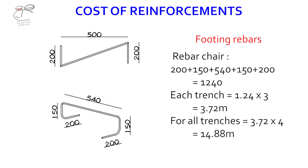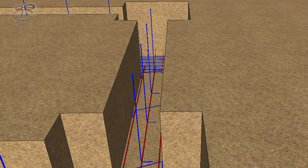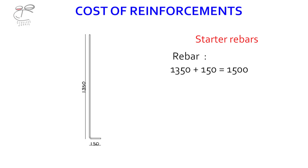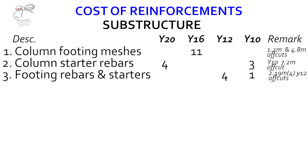14.88 meters is roughly one length. Since we have off-cuts from item 2, we can use one length there and supplement with the off-cut where needed. The starter rebar is about 1.35 plus 0.15 equals 1.5 meters; for each trench there are four units, so 1.5 times 4 is 6 meters. For all four trenches, 6.6 times 4 gives two units of Y-iron, adding to the initial four units to give a total of six iron lengths.